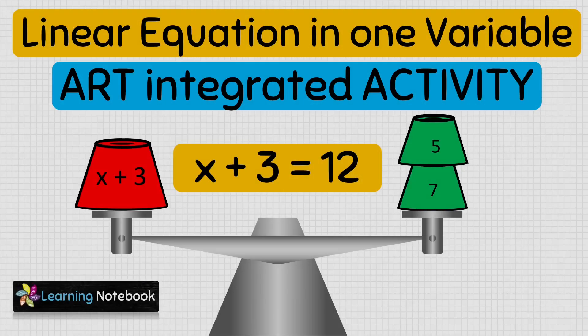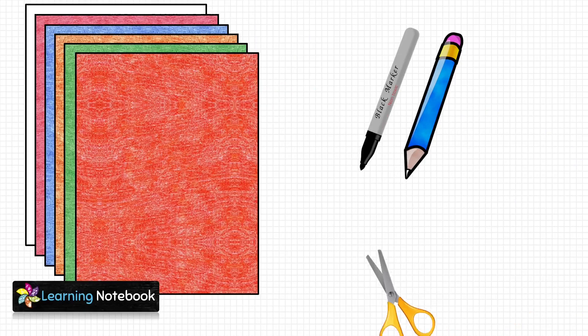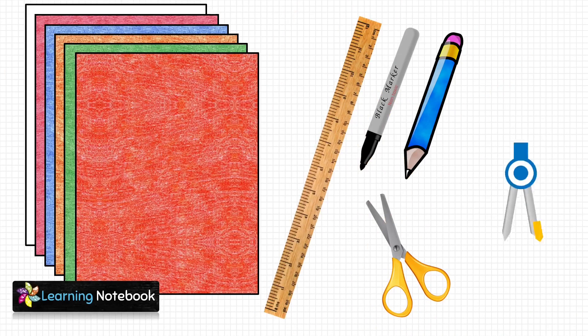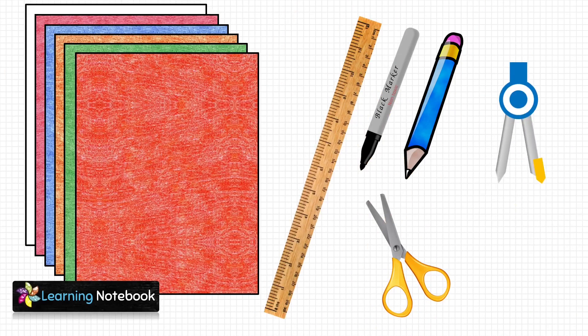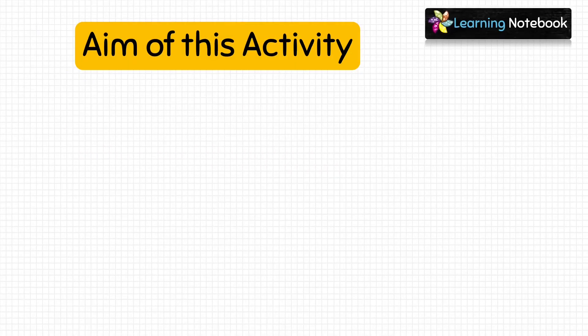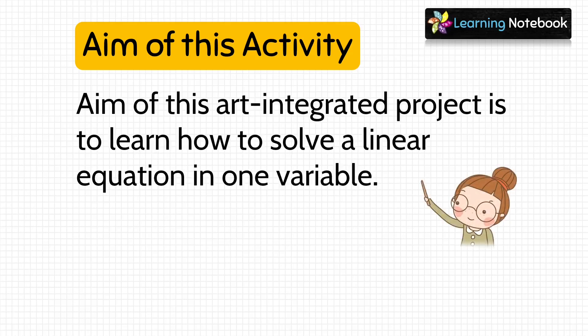Hello students, welcome to our channel, Learning Notebook. In today's video, we will do an interesting art integrated activity on chapter linear equation in one variable. For this activity, we need few colorful A4 sheets, a ruler, a black marker pen, a pencil, a pair of scissors and a compass. The aim of this art integrated activity is to learn how to solve a linear equation in one variable.